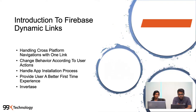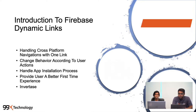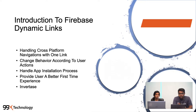Let us focus on the main objective of this webinar: Firebase Dynamic Links. As Champana has explained about deep linking and its brief history, let's look at what the cons were and how Firebase has overcome those cons about deep linking.